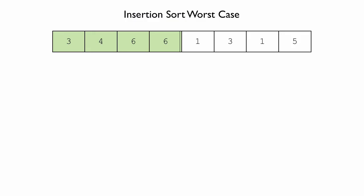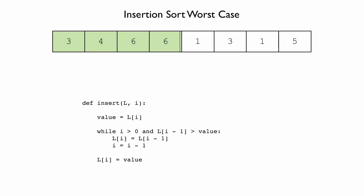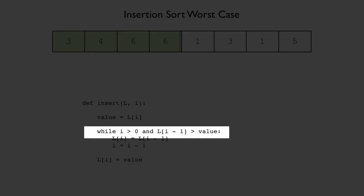Here's the code for insert, with the docstring and comments omitted. Let's look at the while loop condition. There are two parts: i has to be greater than 0, and l at i-1 has to be greater than value — greater than the item that we are trying to insert.